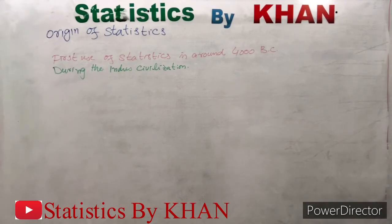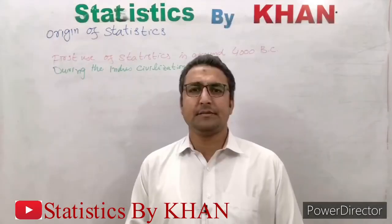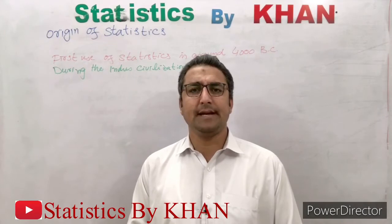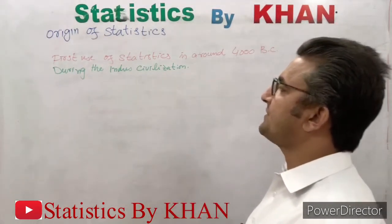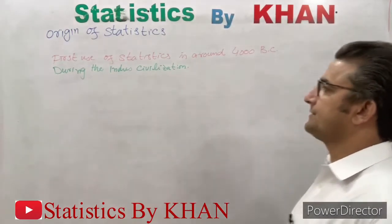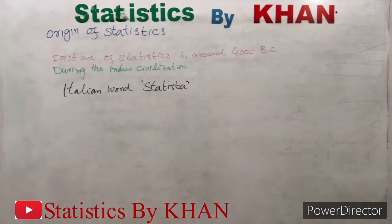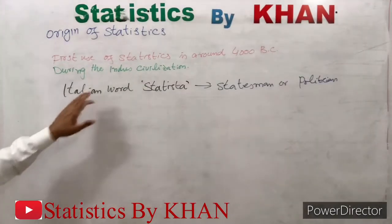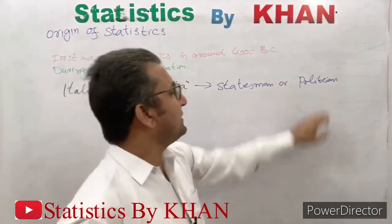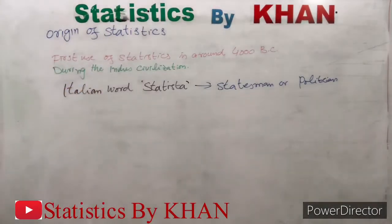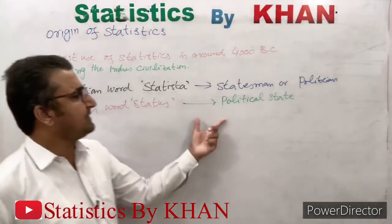The Egyptians gathered such data in 3050 BC. The word 'statistics' itself was not used until the 18th century. In the 18th century, the word 'statistics' was derived from many different languages. It comes from the Italian word 'statista', which means statesman or politician. Statistics has also been derived from the Latin word 'status', which means political state.